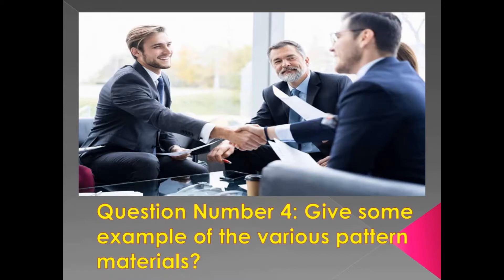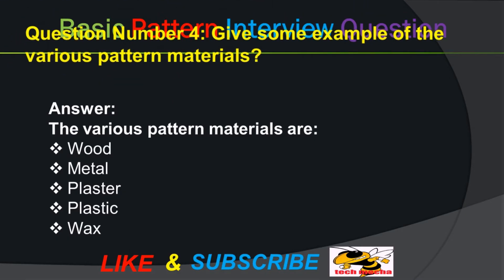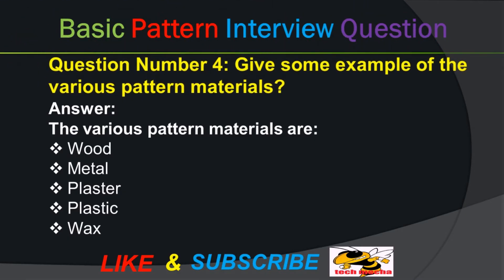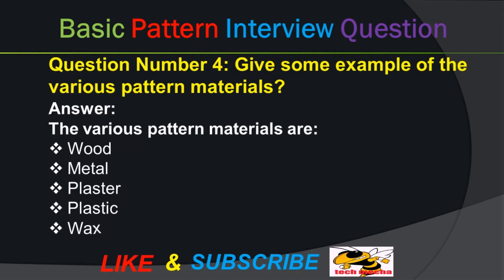Question number four: Give some examples of the various pattern materials. Answer: The various pattern materials are: wood, metal, plaster, plastic, and wax.